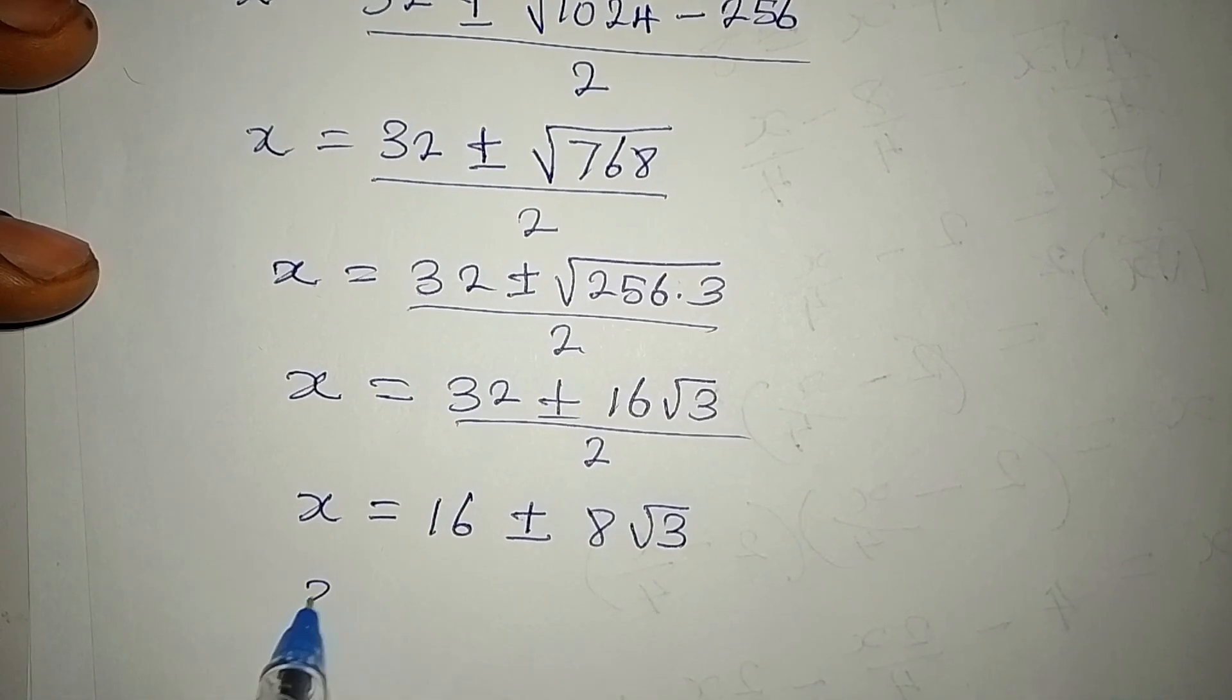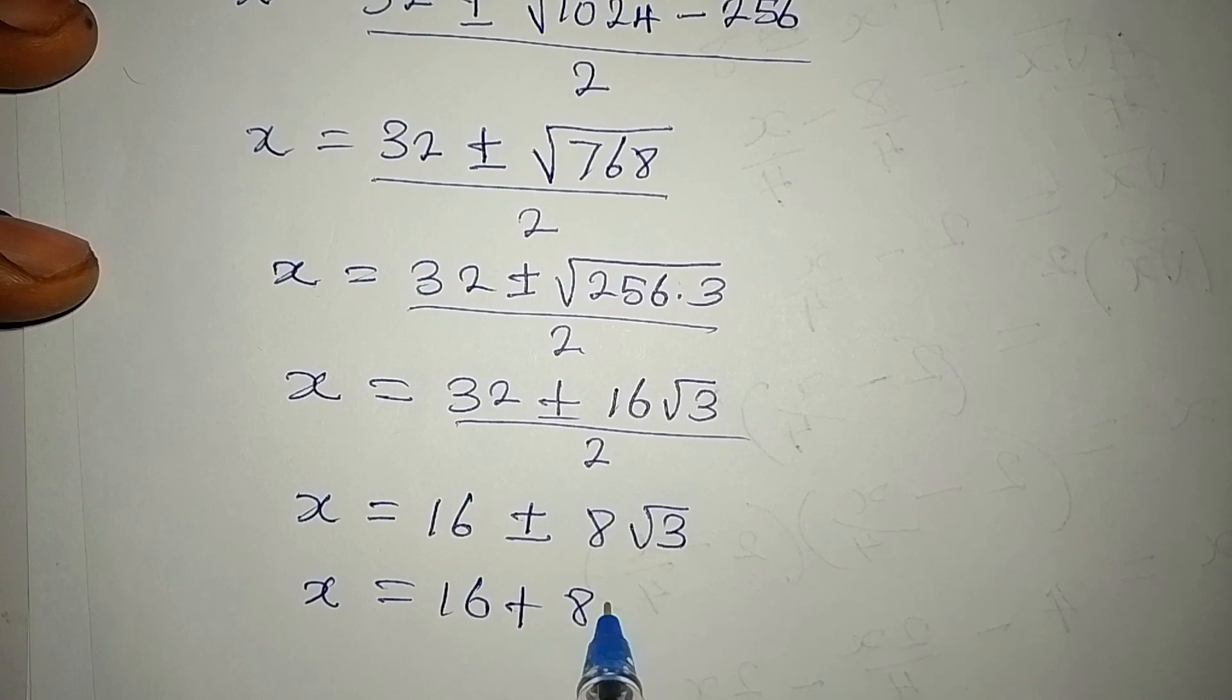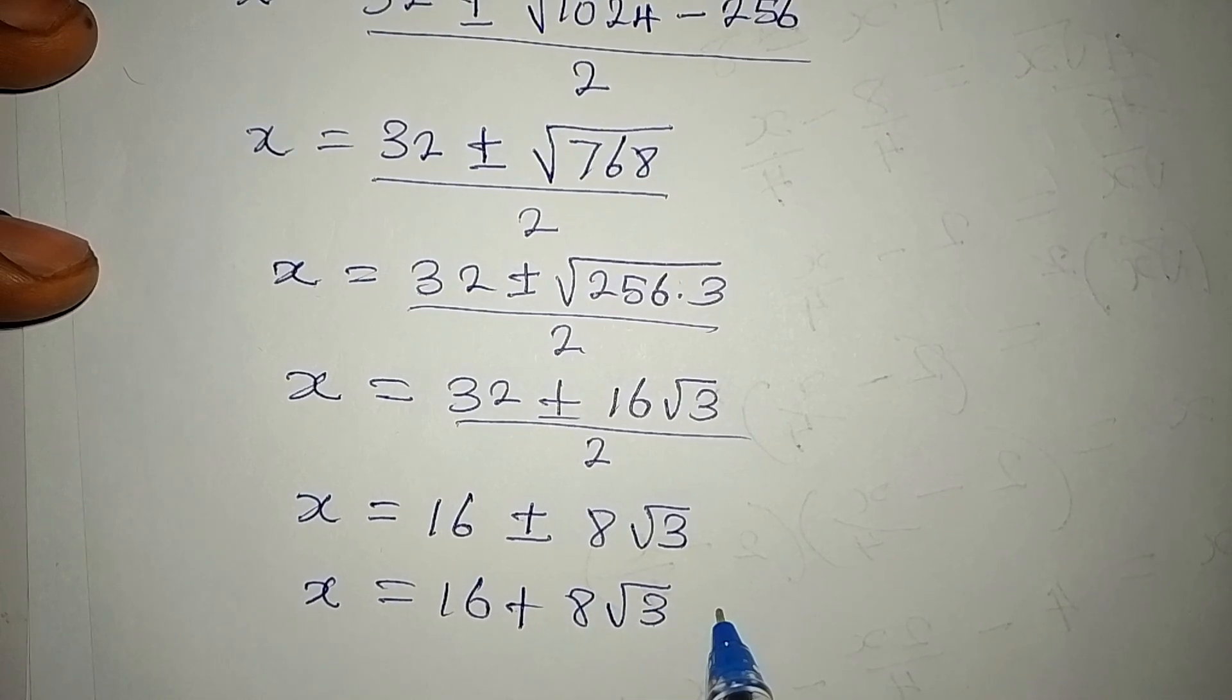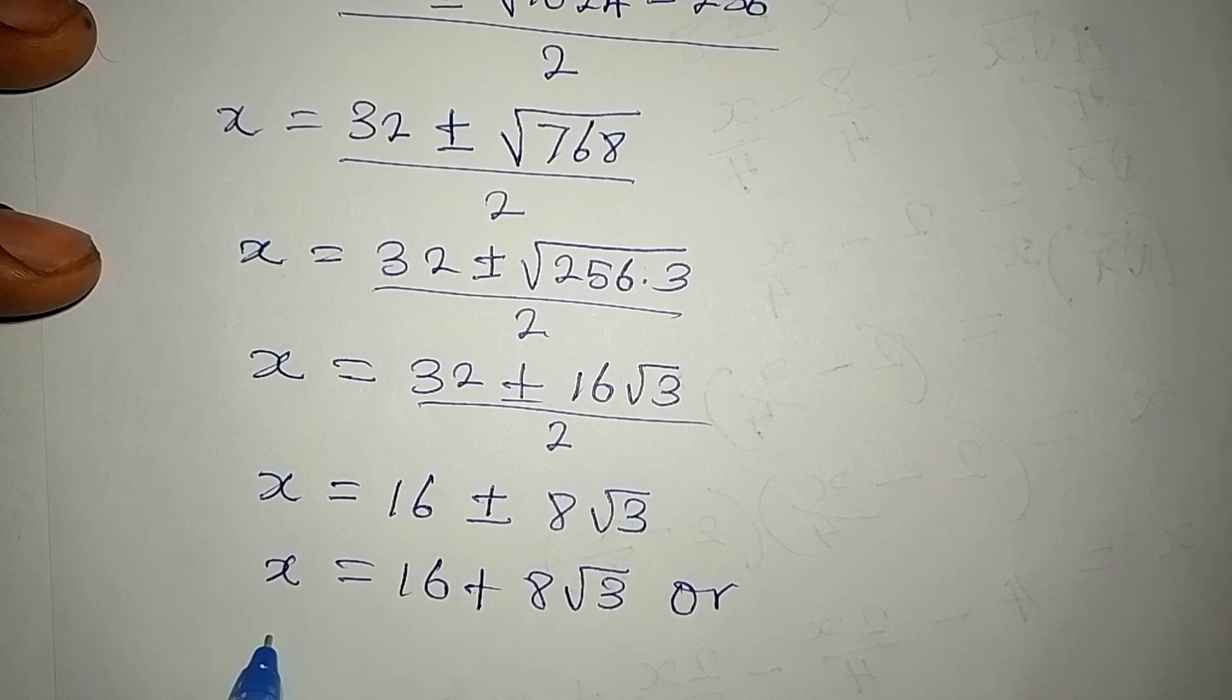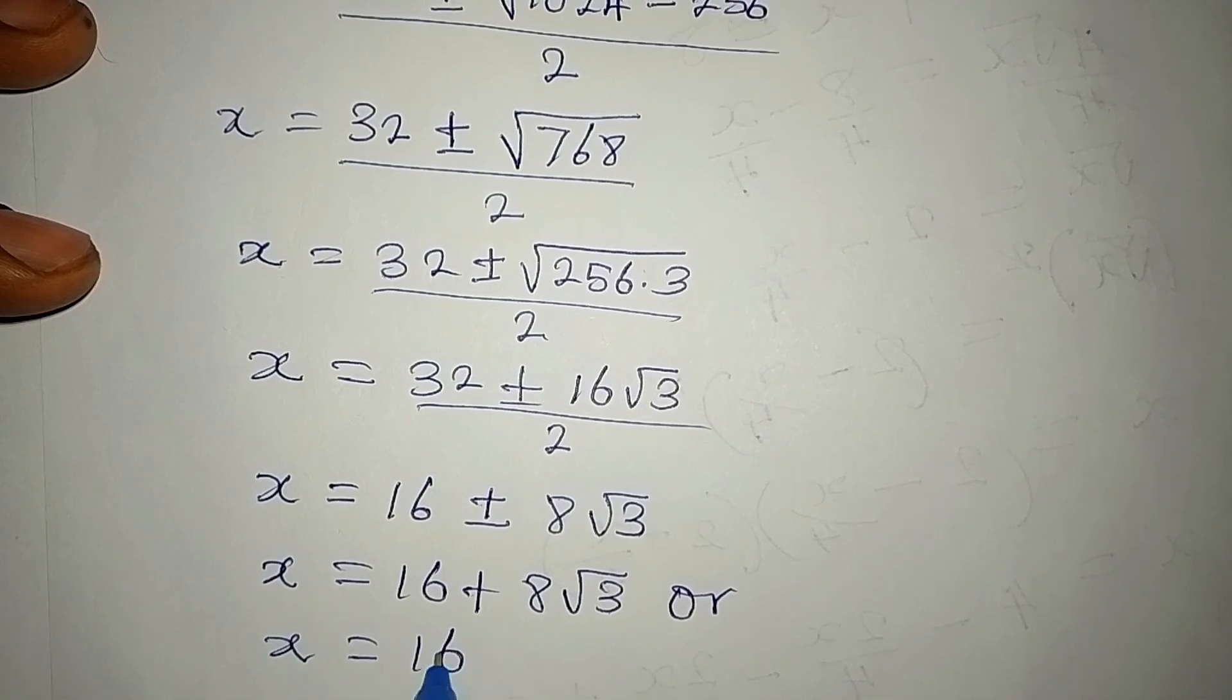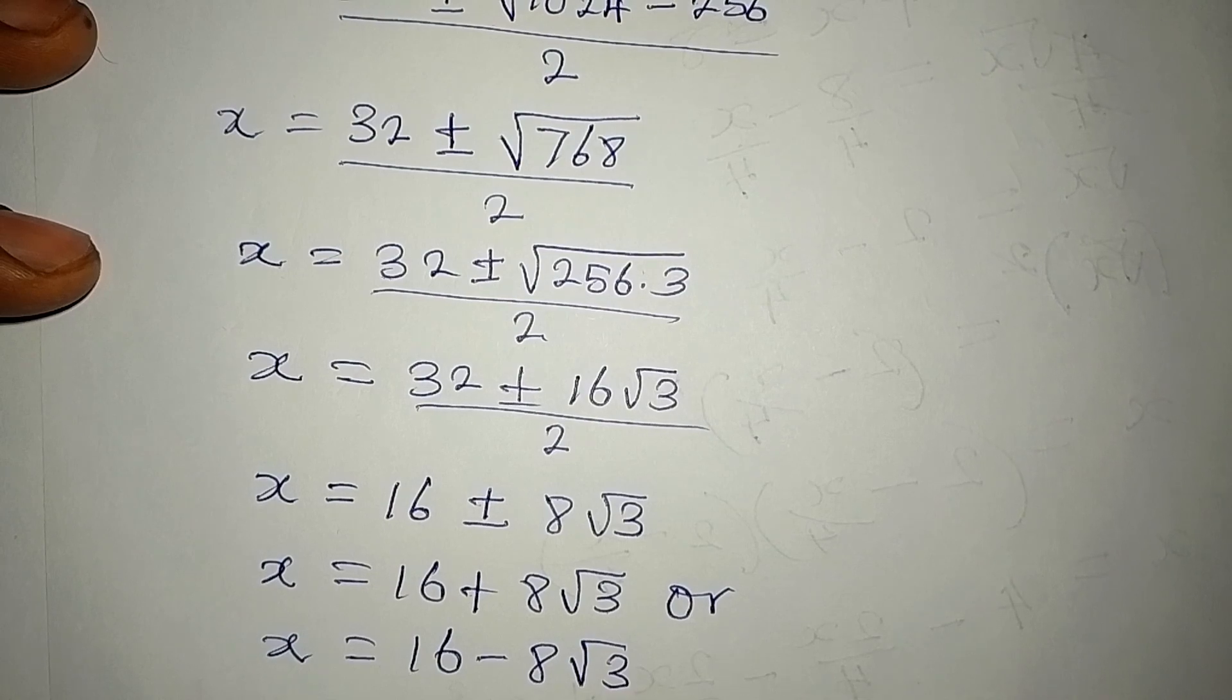Now what do we do? This means that x is equal to 16 + 8√3, or we have x to be equal to 16 - 8√3. So this is what we have.